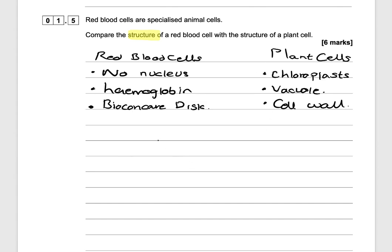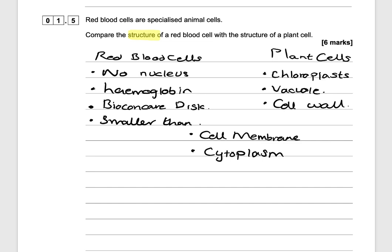Now let's look at some similarities between the red blood cell and the plant cell. Both of them have a cell membrane and both also have cytoplasm. Plant cells are bigger than red blood cells, so you could also say that red blood cells are smaller than plant cells. That will get you the six marks, because we've drawn the table and looked at both differences and similarities.